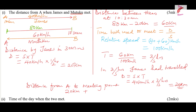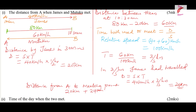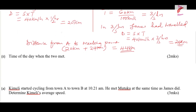Before they met, James traveled another 24 kilometers — the distance we got from the time used to meet of 3/5 hours. So the total distance from A to the meeting point, where James and Mutuko met, is 20 plus 24, which gives 44 kilometers. That is the solution for that part.